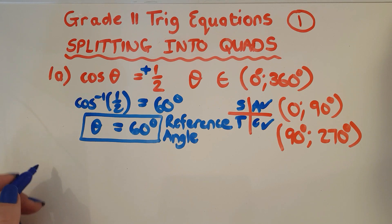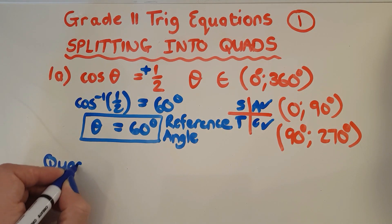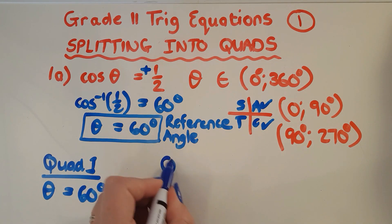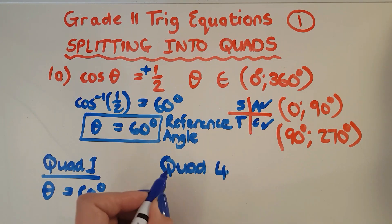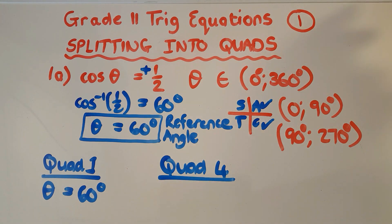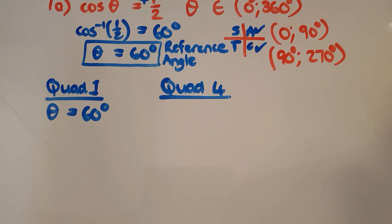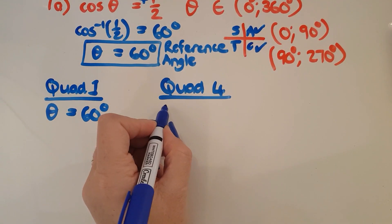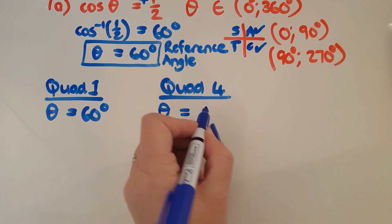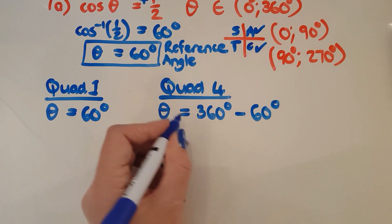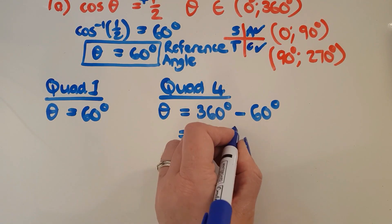But from this perspective, we now have to split it into the quads. So now I'm going to say, in quad one, and this is a copy and pasting exercise, I'm going to have theta is 60 degrees. And in quad four, which is the other one I've got to accommodate, quad four is the quad where you take 360 minus your reference angle and you get the answer. So once again, those reduction formulas come into play. So in quad four, I've got to say theta is 360 degrees minus my reference angle.